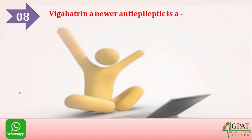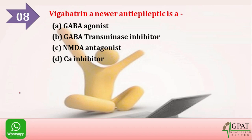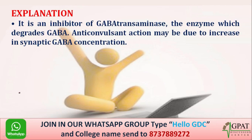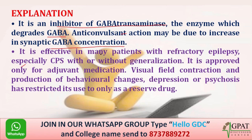The next question: vigabatrin, a newer antiepileptic, is — option A: GABA agonist, option B: GABA transaminase inhibitor, option C: NMDA antagonist, option D: calcium inhibitor. The correct answer is GABA transaminase inhibitor. Vigabatrin inhibits GABA transaminase, the enzyme which degrades GABA, and its anticonvulsant action is due to increased synaptic GABA concentration.